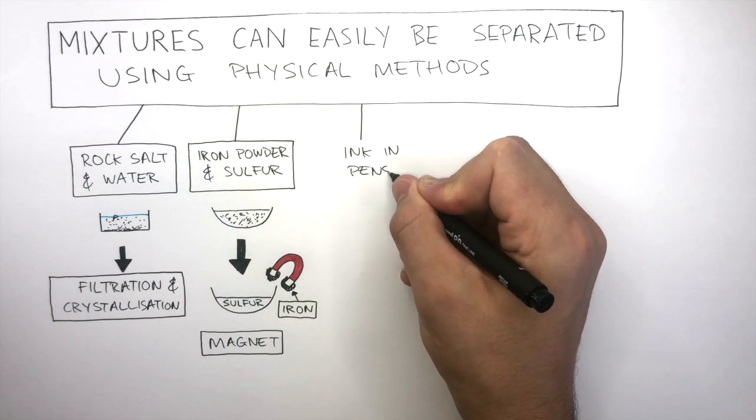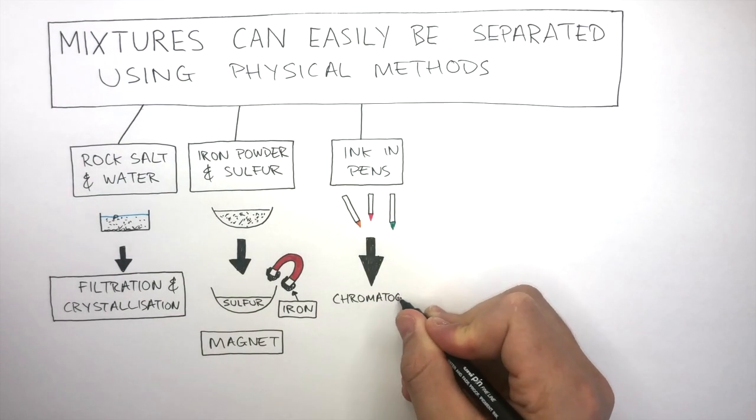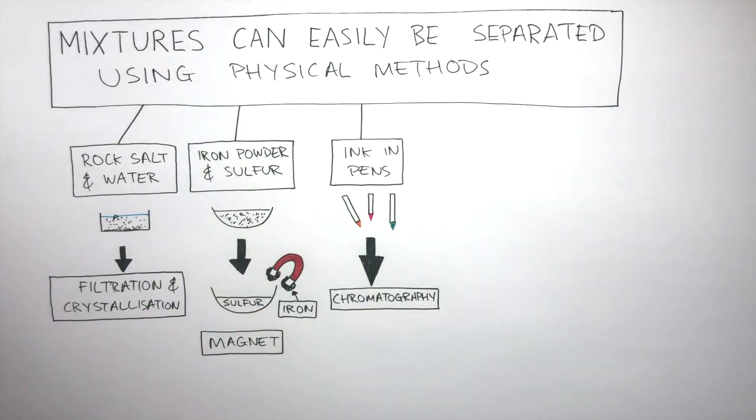Ink in pens can be separated using chromatography. It separates the mixture of ink into their individual compounds.